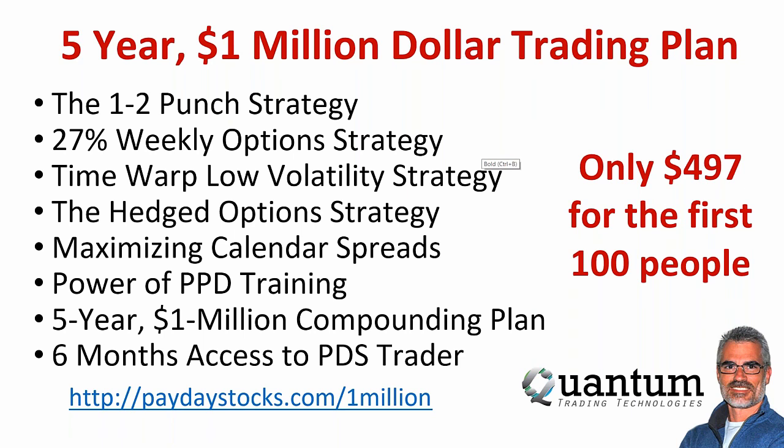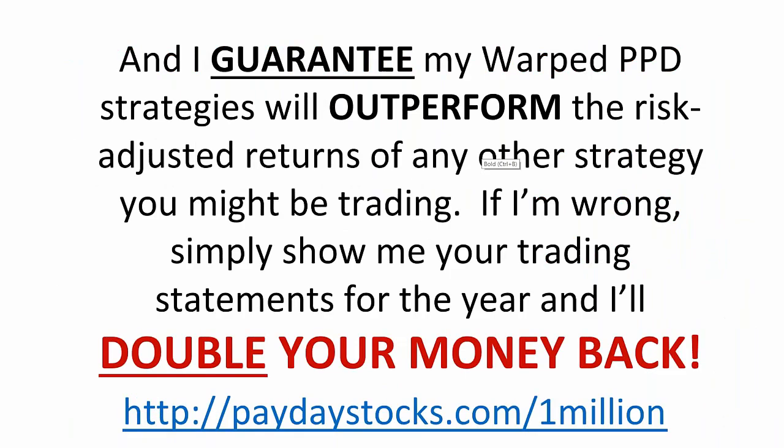If you can average $60 a week non-compounded over five years, properly compounded that can go into one million dollars. You may not reach that goal, but you still want to follow the plan — because even $10 a week still turns into $38,000 using that same plan. It's a powerful compounding plan, plus six months' access to PDS Trader.